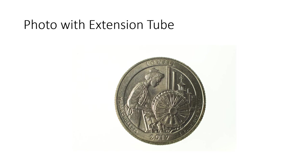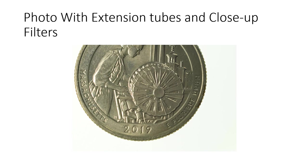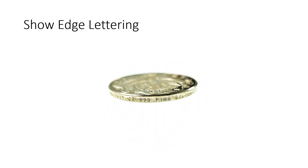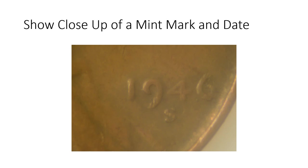With an extension tube and close-up filter combined, you get even more magnification — the coin fills more than the whole sensor so you capture fine details. A photo taken with just an extension tube can let you actually read the edge lettering on a coin. A close-up of a mint mark and date was done with both the extension tube and close-up filter.